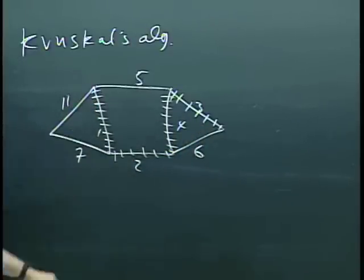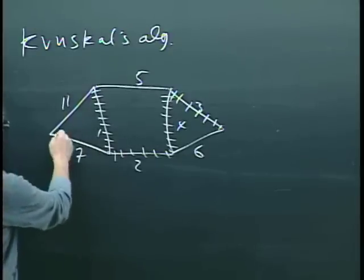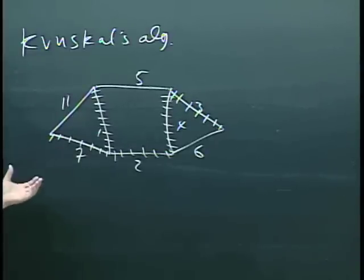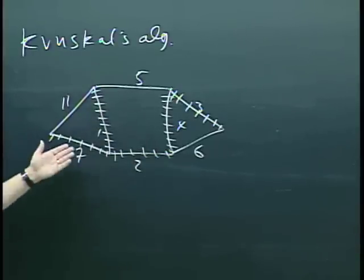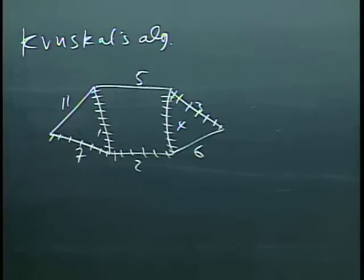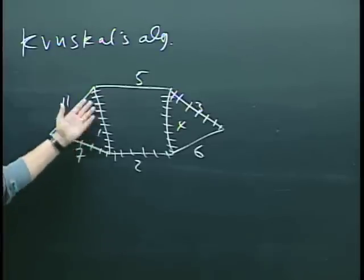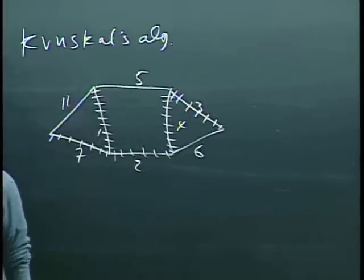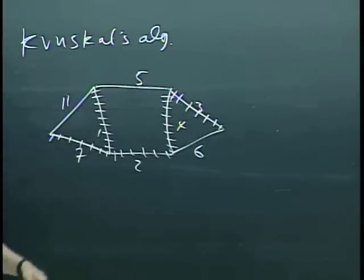The next one considered is 7. It doesn't create a cycle. In this whole process, we also have a termination condition: every node in the tree is now included. Since we know exactly how many edges will be in a spanning tree — it's always one less than the number of nodes — when you have enough edges or when you've spanned all of the nodes, you know to stop. So that's Kruskal's algorithm by example and verbally. It's more formally in the book, and last week we wrote it down more completely.